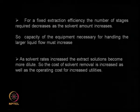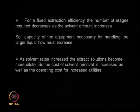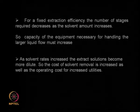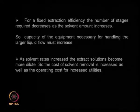For a fixed extraction efficiency, if you keep increasing solvent amount you can reduce the number of stages; if you decrease solvent amount you need more stages. If you have more solvent, the equipment capacity must be large enough to handle it, and the product is in a very diluted form — so solvent removal cost needs to be included. The distillation column has to be larger and the steam required to distill out the material increases, raising operating and utility costs. So you need to balance between putting in more stages or using more solvent with fewer stages.